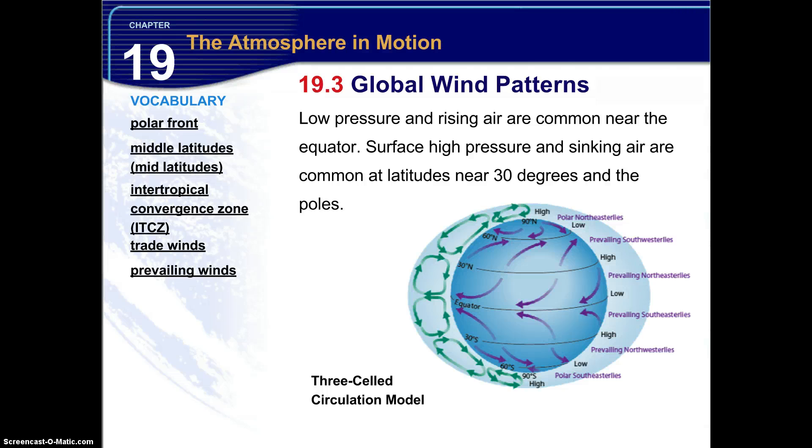Low pressure and rising air are common near the equator. Surface high pressure and sinking air are common at latitudes near 30 degrees and at the poles. So if you look at this three-celled circulation model, you notice that up here at the poles at 90 degrees, you see the arrows are going down towards the pole. That also occurs at 30 degrees. See the arrows are going down towards the surface of the planet. Those are areas of high pressure. Now the low pressure areas are any areas around the 60 degrees north. You see the pressure goes up. So it would be low pressure on the surface and at the equator as well. The pressure is going up. So these areas, depending on where that circulation pattern is taking place, can determine if there's a low pressure system or a high pressure system.